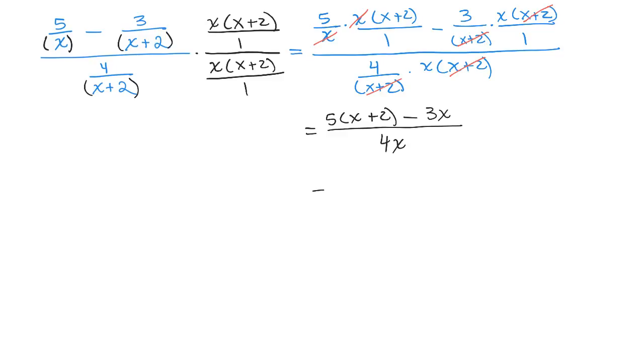If I simplify that numerator by doing the distributive property, I have 5x plus 10 minus 3x all over 4x, which is 2x plus 10 over 4x.